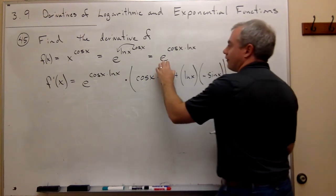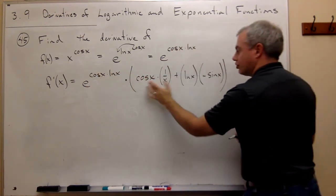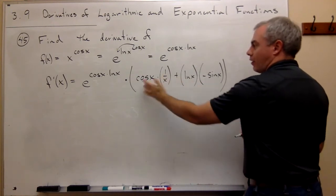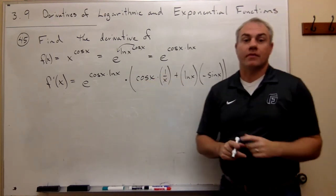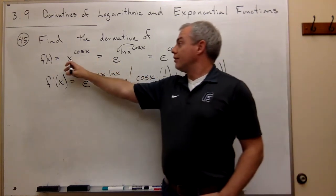So I've got the derivative of e to a power is e to that power times the derivative of the power. And that gets us the derivative of this guy.